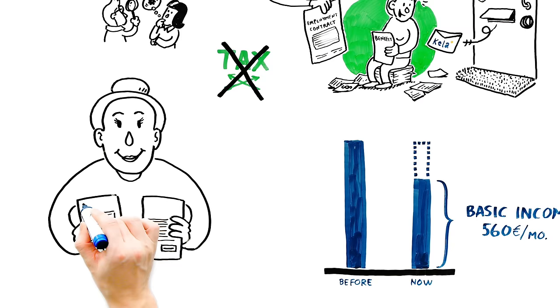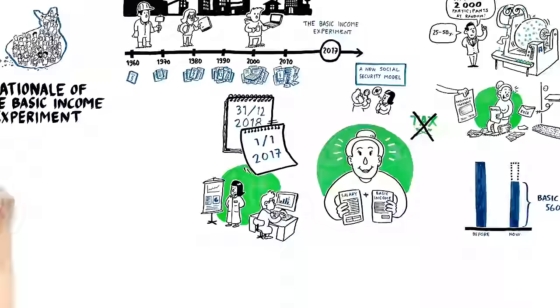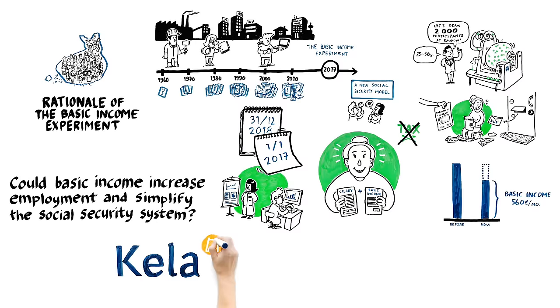The experiment will run for two years, and the employment situation of the participants will be monitored throughout the experiment, which will examine the question: could Basic Income increase employment and simplify the social security system? Kela will be responsible for implementing the experiment.